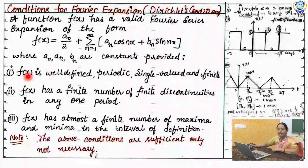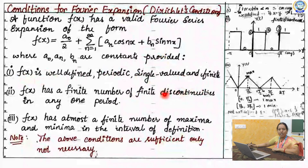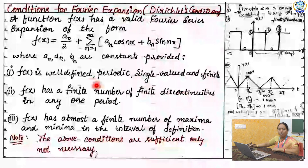Let us see the first condition. It is nothing but: f(x) is well-defined, periodic, single-valued, and finite. This is your first condition. You are all familiar with this terminology, so let's move to the second important condition.